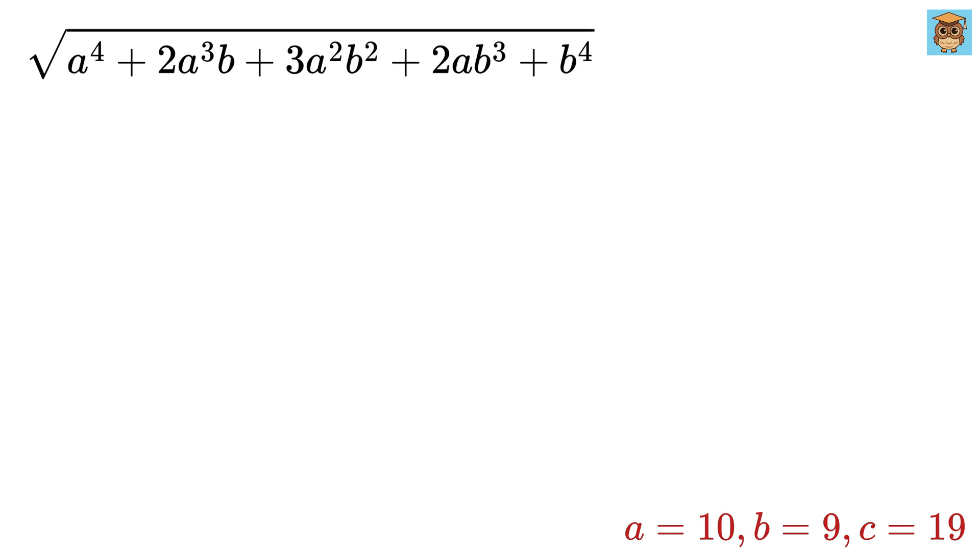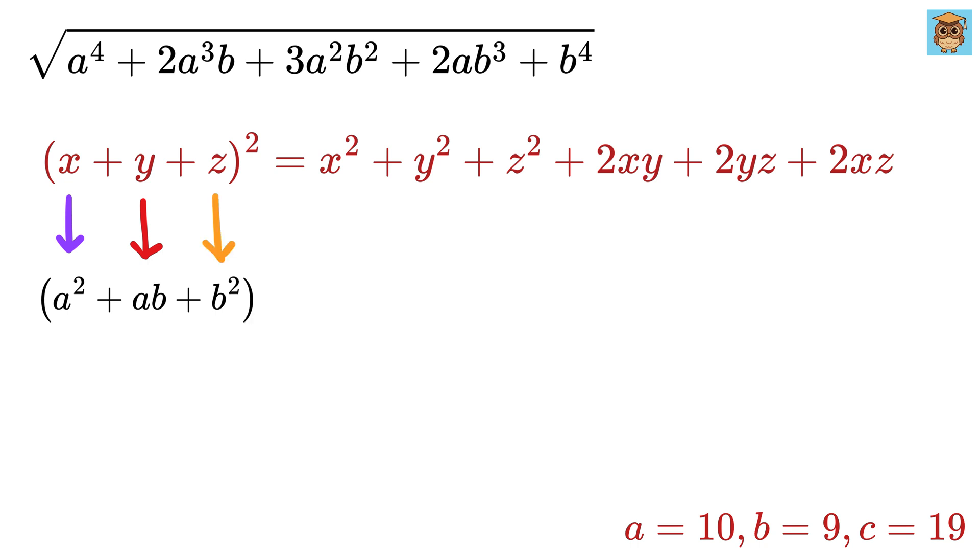Now here comes the real magic. We know that when we expand X plus Y plus Z whole squared, it becomes X squared plus Y squared plus Z squared plus 2XY plus 2YZ plus 2XZ. So if we take X as A squared, Y as AB, and Z as B squared,